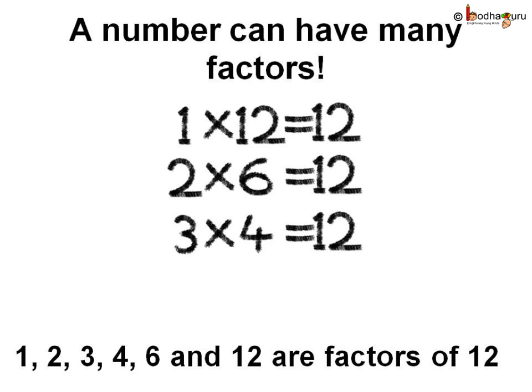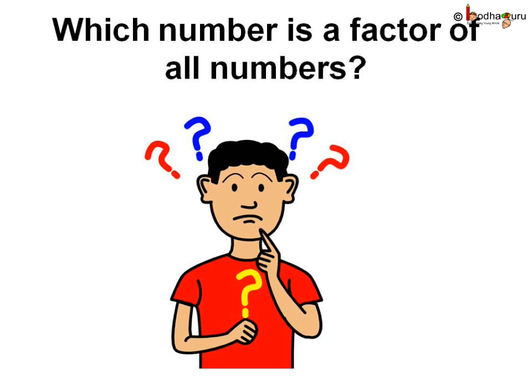A number can have many factors. 1 multiplied by 12 is equal to 12, so 1 and 12 are the factors of 12. Also, 2 multiplied by 6 is equal to 12, so 2 and 6 are factors of 12 as well. And lastly, 3 and 4 are also factors of 12 because 3 multiplied by 4 is equal to 12. Thus, 1, 2, 3, 4, 6 and 12 are the factors of 12.